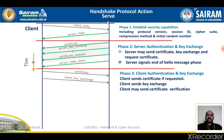For fixed Diffie-Hellman, the client's public Diffie-Hellman parameters were already sent in the certificate message, so the content of this key exchange message is null. Finally in this phase, the client may send a certificate verify message, which provides explicit verification of the client certificate. This message is only sent following any client certificate that has signing capability or contains fixed Diffie-Hellman parameters.